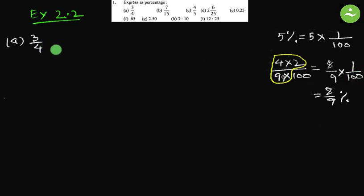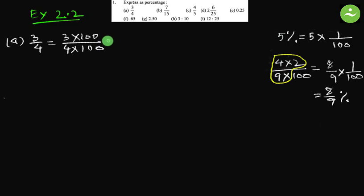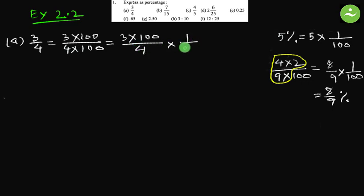So 8 by 9 times 1 by 100 means percent. Now let us start with part a: 3 by 4. We need to get 1 by 100 as part of it. So we multiply both 3 and 4 by 100 so the value doesn't change. We separate 1 by 100: 3 times 100 over 4. Simplify 4 and 100 — we get 25. So the answer equals 75 percent.